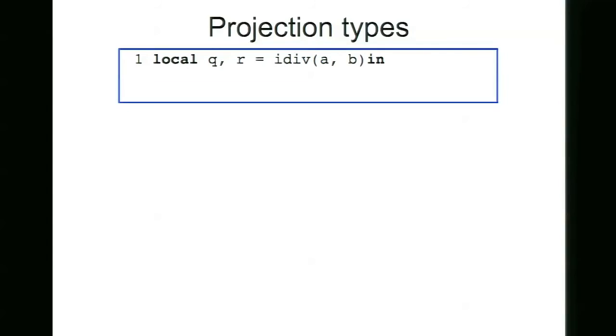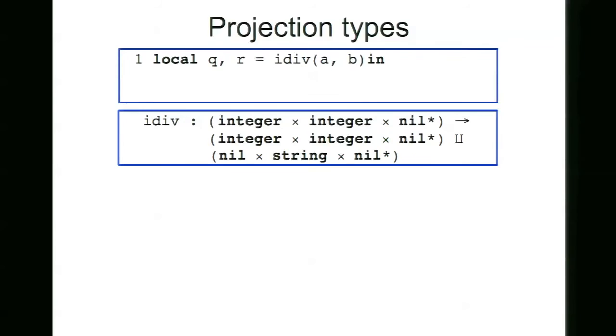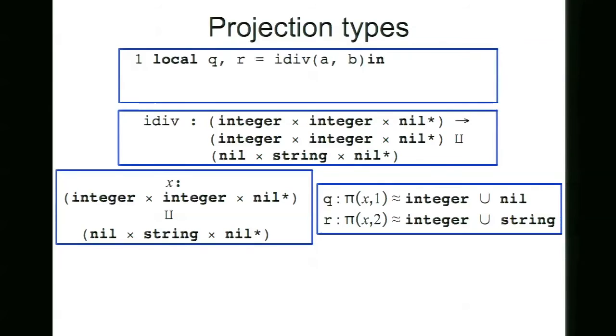The second idiom that we have is overloading on the return types. The way we handle this is through projection types. So when we find a function that returns multiple values and actually different results, actually this function is returning a union of tuples. When the type checker finds a union of tuples in a local declaration, unannotated local declaration, it will store this union of tuples in a projection environment and assign this to a projection variable, a special environment. And then it will assign projection types to variables Q and R. So this means that Q will project to the first components in this union of tuples and R will project its type to the second component in this tuple. So Q, you have integer union nil. And R will have type integer union string.